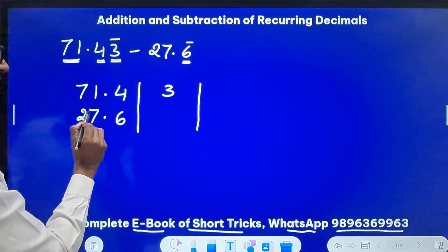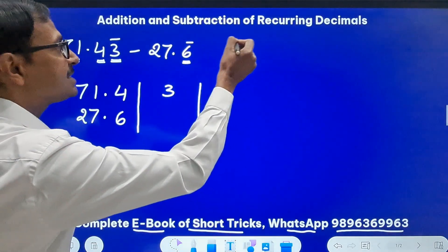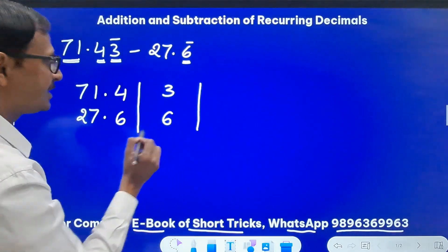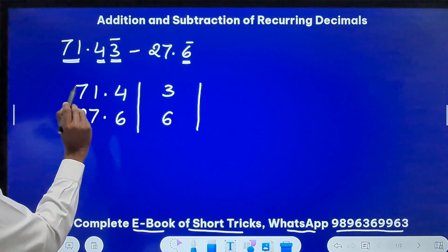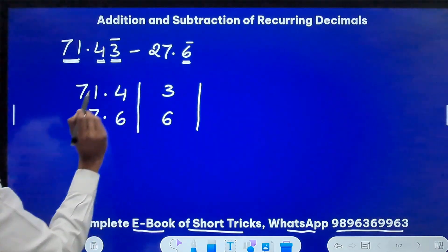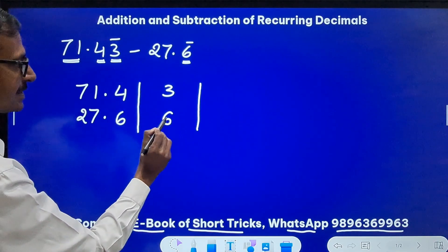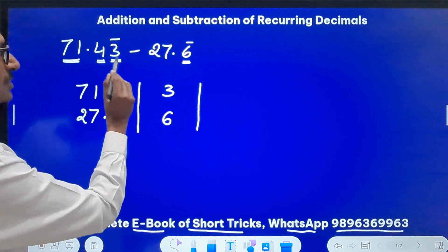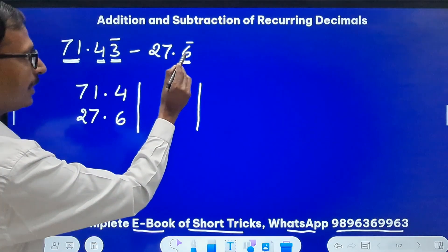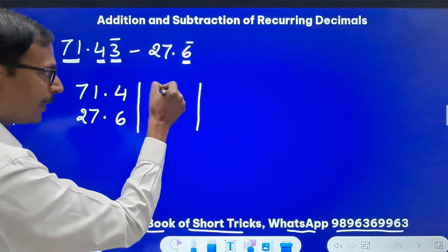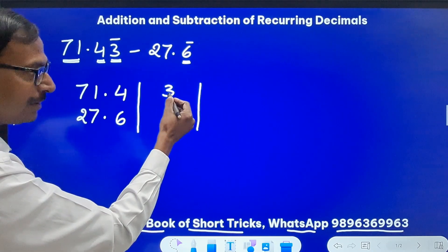666666 repeats. So 6, see if the number has to continue 71.43, 27.66. Why did I stop here? Because the LCM of one and one digit is one digit, so I have to write one digit in the middle part.